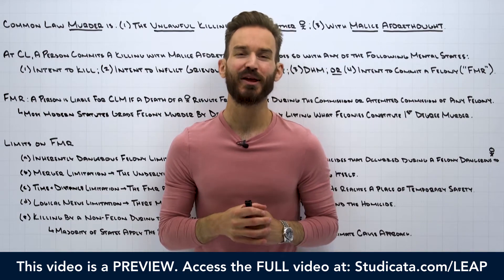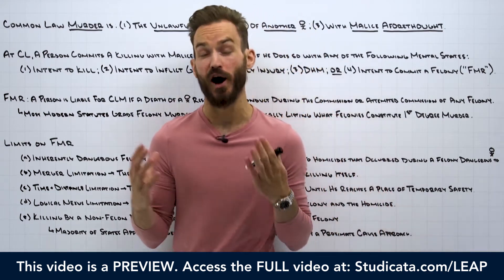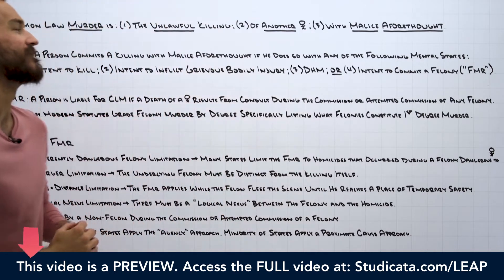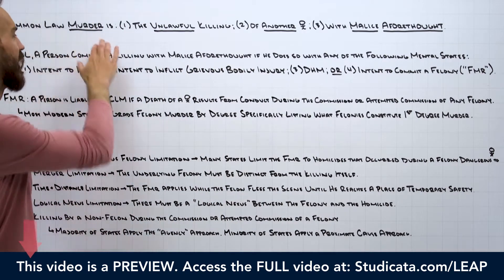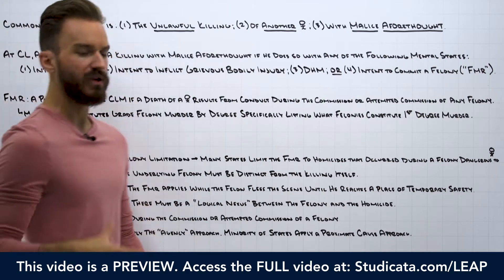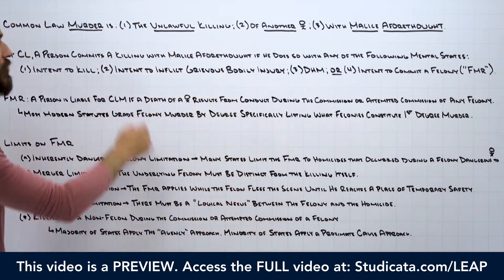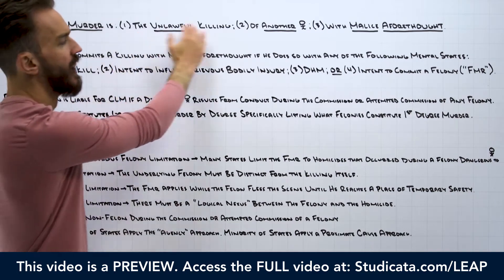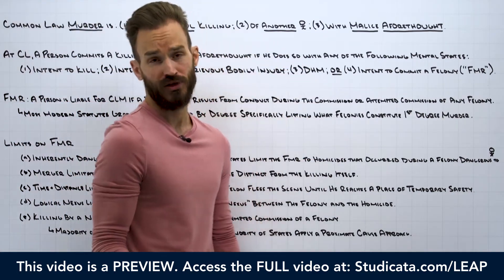In this lesson, we're continuing our discussion of common law murder. Specifically, we're going to focus on the felony murder rule. At this point, we've already fleshed out what common law murder is. Remember, it's three elements: the unlawful killing of another human being with malice aforethought.